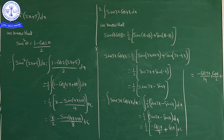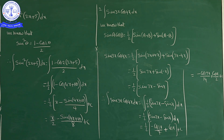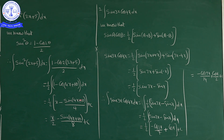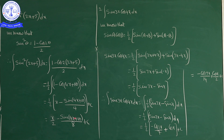So the final answer is: x/2 minus sin(4x+10)/8 plus C. Multiplying 1/2 inside gives x/2, and the 4 in the denominator multiplied by 2 gives 8.